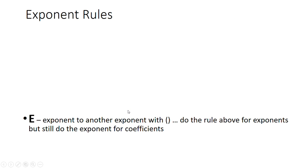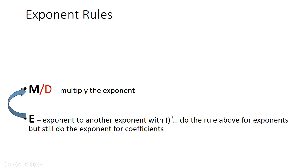The E stands for anytime we see an exponent to another exponent. You'll recognize this when you see parentheses with an exponent on the outside. When this happens, you do the M — which stands for multiply the exponents together. Something very important: you still apply the exponent to the coefficients. This rule is only for exponents.